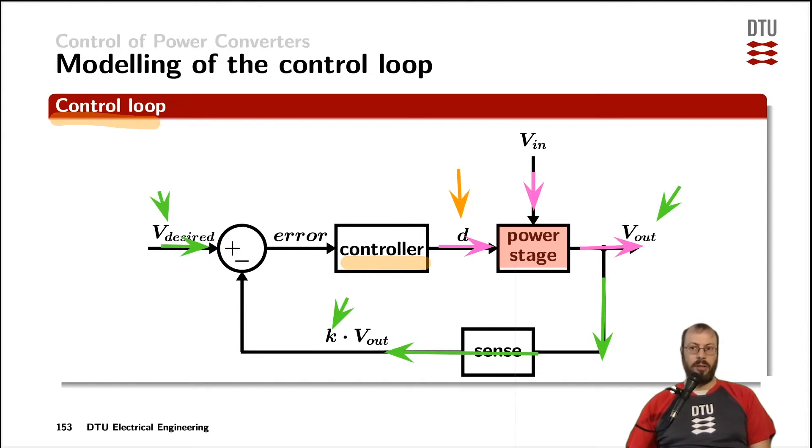To close the control loop we subtract the feedback signal from the desired input voltage and get the error or the output of an error amplifier as the input of the controller.